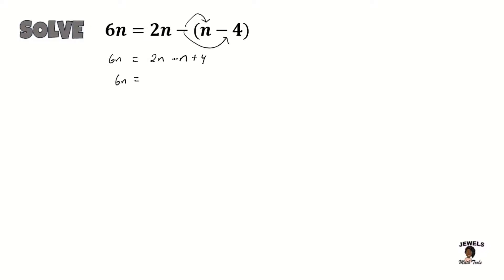So 2n minus n will equal to n plus 4. And since my 6n is on the left hand side, I'm going to move my single n to my 6n. And now simplify for my equation. So 6n minus n will equal to 5n equal to 4.